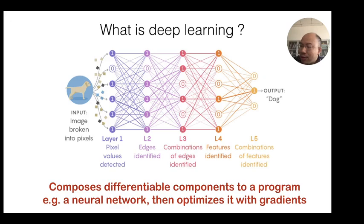To digest what is under the hood, we need to reconsider this question: what is deep learning? We often hear that deep learning people just train a neural network, but what does this really mean? If you think deeper, deep learning means you compose a bunch of differentiable components into a program. Neural network is actually a program. Then you optimize the whole program using gradient information.